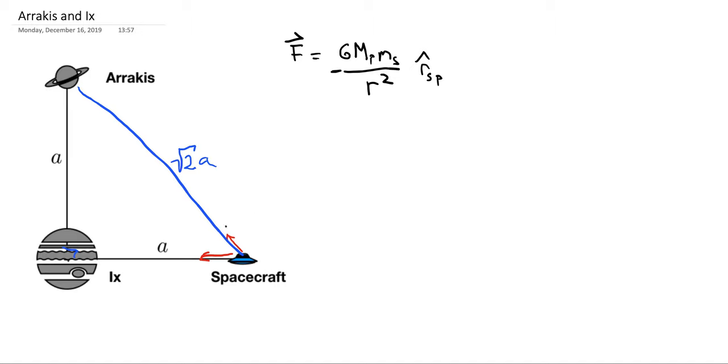What we need to do is find the magnitude of the net gravitational force. The important thing here is that the force from Ix on the spacecraft is just going to have a magnitude of Gm times the mass of the spacecraft over a squared. The force of Arrakis is going to be Gm little m over square root of 2a. So taking these two forces we have to remember that this force of Arrakis is pointing up in one direction and the force of Ix is going in the other direction.